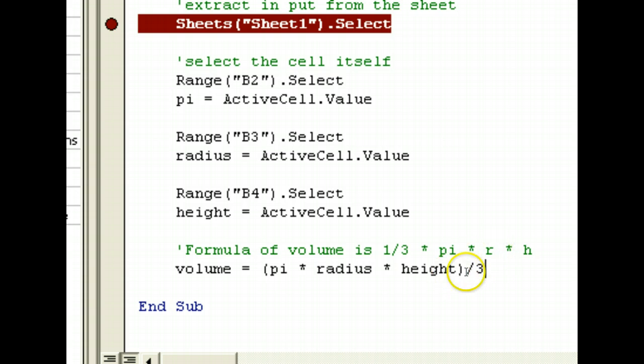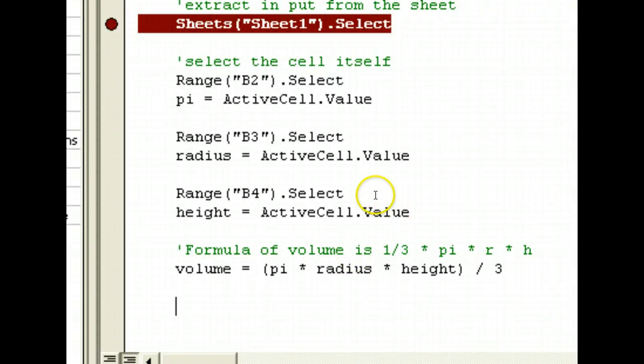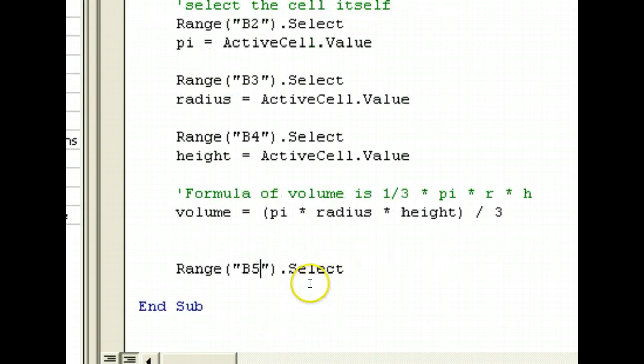So, once you have calculated the volume, we will output the volume. So, where do we want to output the volume to? The volume is in B5. B5. Let's highlight this. B5. So, what we do is now, we select B5. Range B5. Let me scroll down. And then, what we can do is ActiveCell.Value equals to volume.